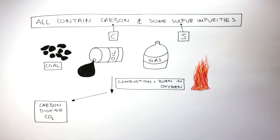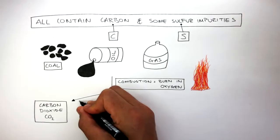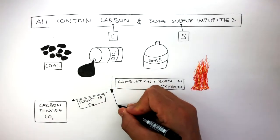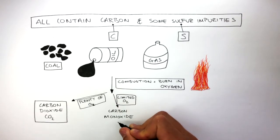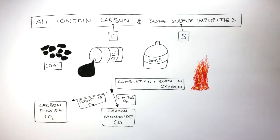We already know carbon dioxide is only formed when there is plenty of oxygen. If there is limited oxygen, then carbon monoxide, which has a molecular formula of CO, forms.